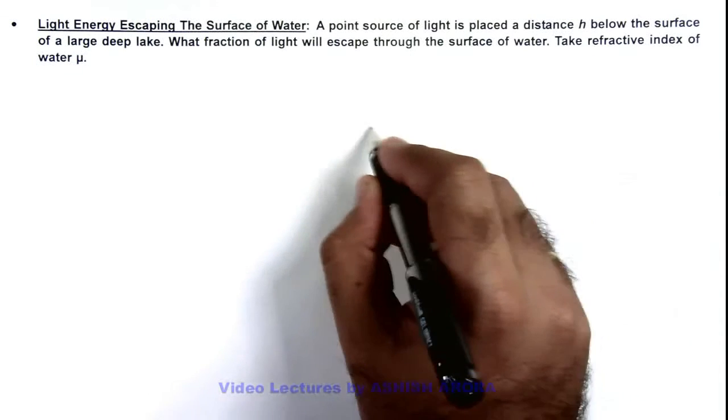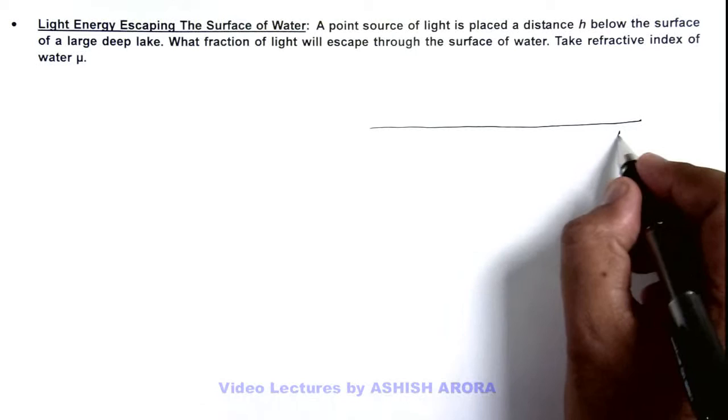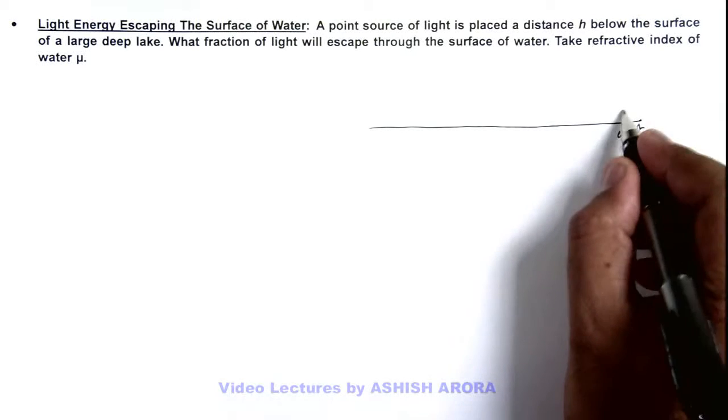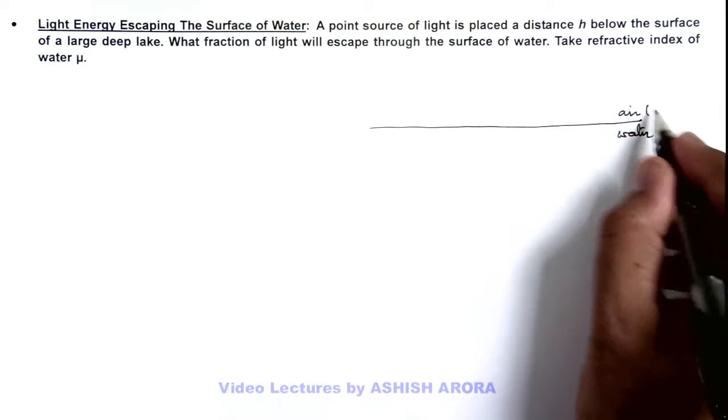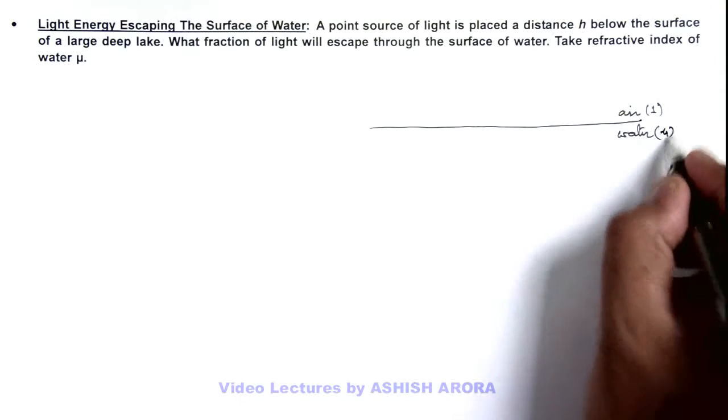Now in this situation if we consider this surface of water and air as an interface, we know air has a refractive index 1 and water is given with refractive index mu.